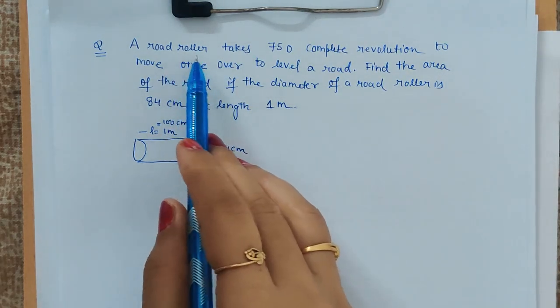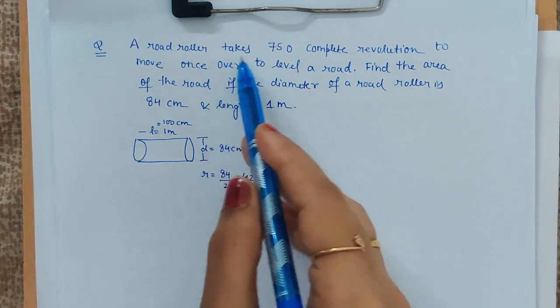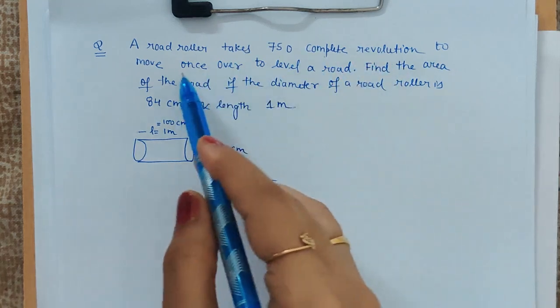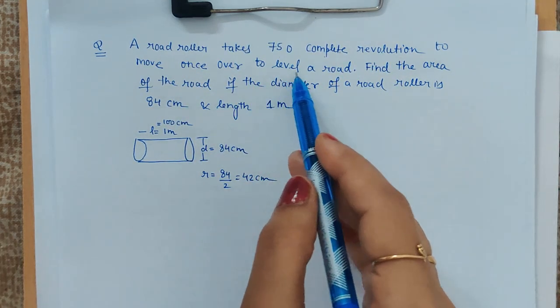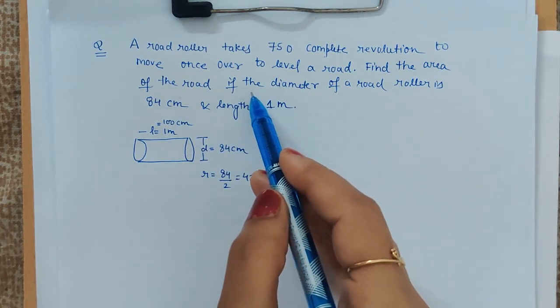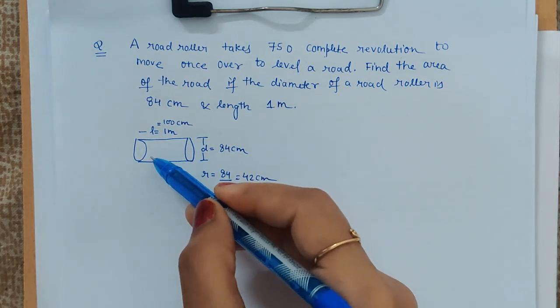Let's have a look at this road roller problem. It says that it takes 750 complete revolutions to make once over to level a road. Find the area of the road. So first we will be finding the curved surface area.